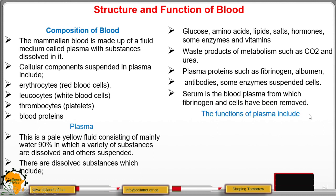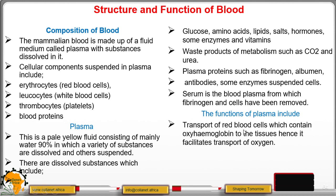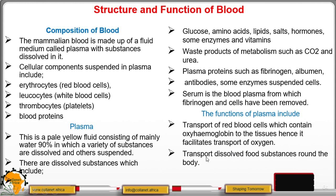Some functions of plasma: first, transport of red blood cells containing hemoglobin to the tissues, facilitating transport of oxygen. Second, transport of dissolved food substances around the body, such as glucose and amino acids.